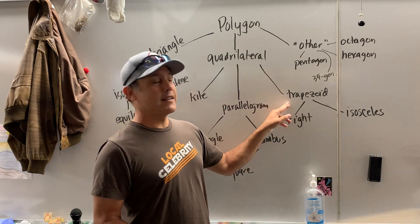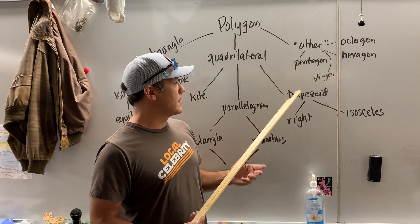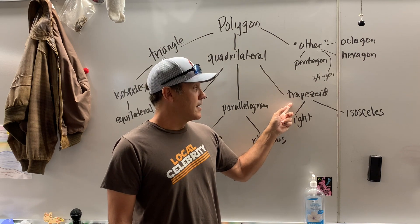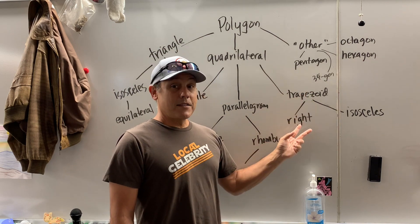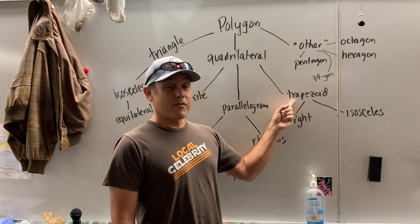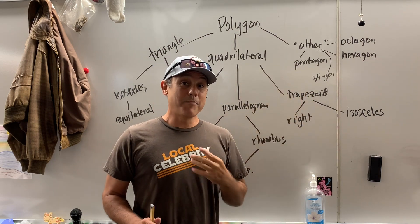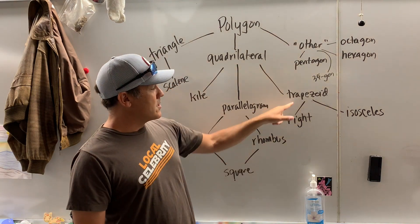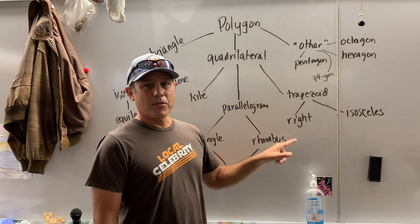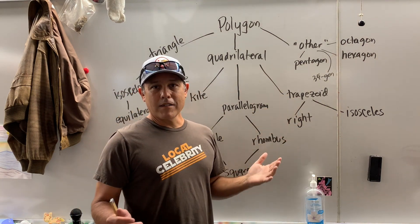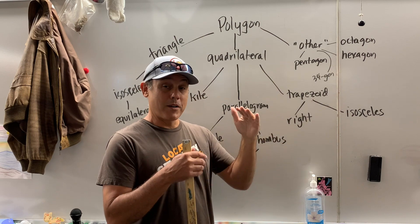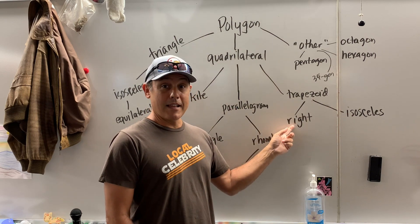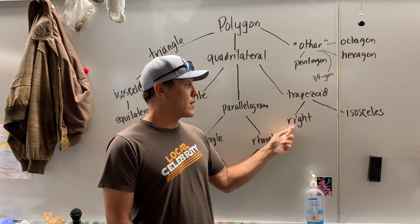Last but not least, the quadrilateral had a kid called a trapezoid. There are two kinds of trapezoid. First of all, every trapezoid has one pair of parallel sides. There is a right trapezoid — take a wild guess. It's a trapezoid with one pair of parallel sides, but it's also got two right angles.